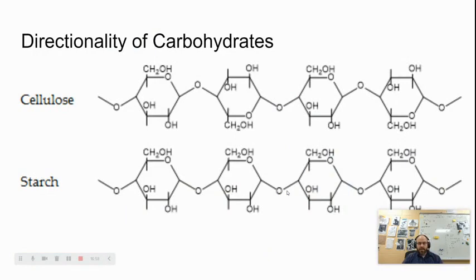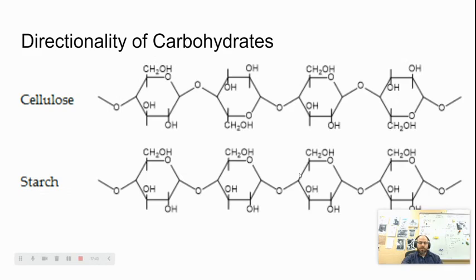Looking at the directionality of carbohydrates: the difference between starch and cellulose is very important. Cellulose has an alternating pattern of oxygen — one going up, one going down — whereas in starch they all go the same direction. Our bodies can digest starch just fine, but cannot digest cellulose because we lack the necessary enzymes. Cellulose makes up cell walls as a structural component, whereas starch is a way that plants store glucose. Both are made up just of glucose, but because they face different directions, they serve completely different functions.